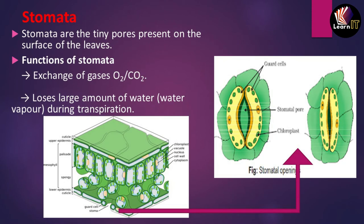The last topic for this video is stomata. Stomata are present under the surface of the leaves, which means on the lower section of the leaves. They are tiny pores or tiny openings present below the surface of the leaves. The functions of stomata are: first, they help in the exchange of gases like oxygen and carbon dioxide in and out of the plant. Second, when water content is high in a plant, they also help in the process of transpiration, letting excess water escape from the plant body.